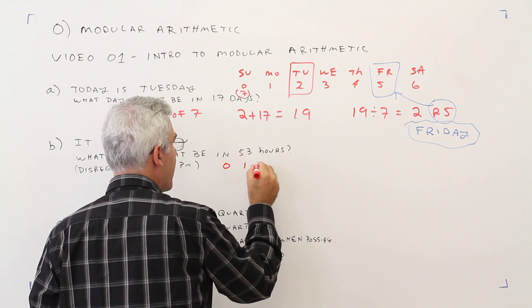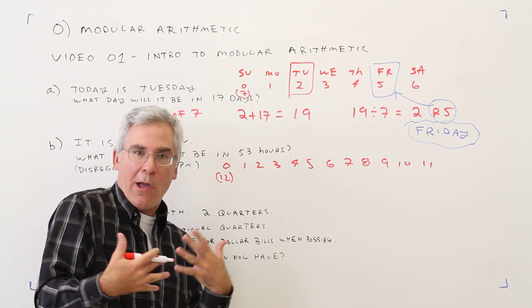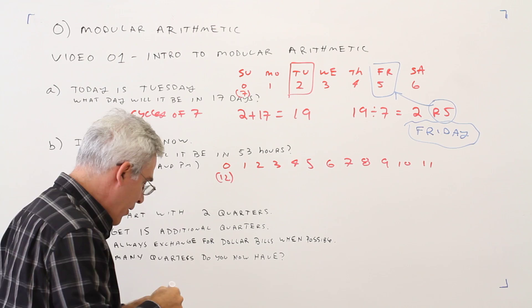Again, we'll make our listing for our clock. Our clock will go 0, 1, 2, 3, 4, 5, 6, 7, 8, 9, 10, 11. And again, that 0 and 12 come on the same thing.